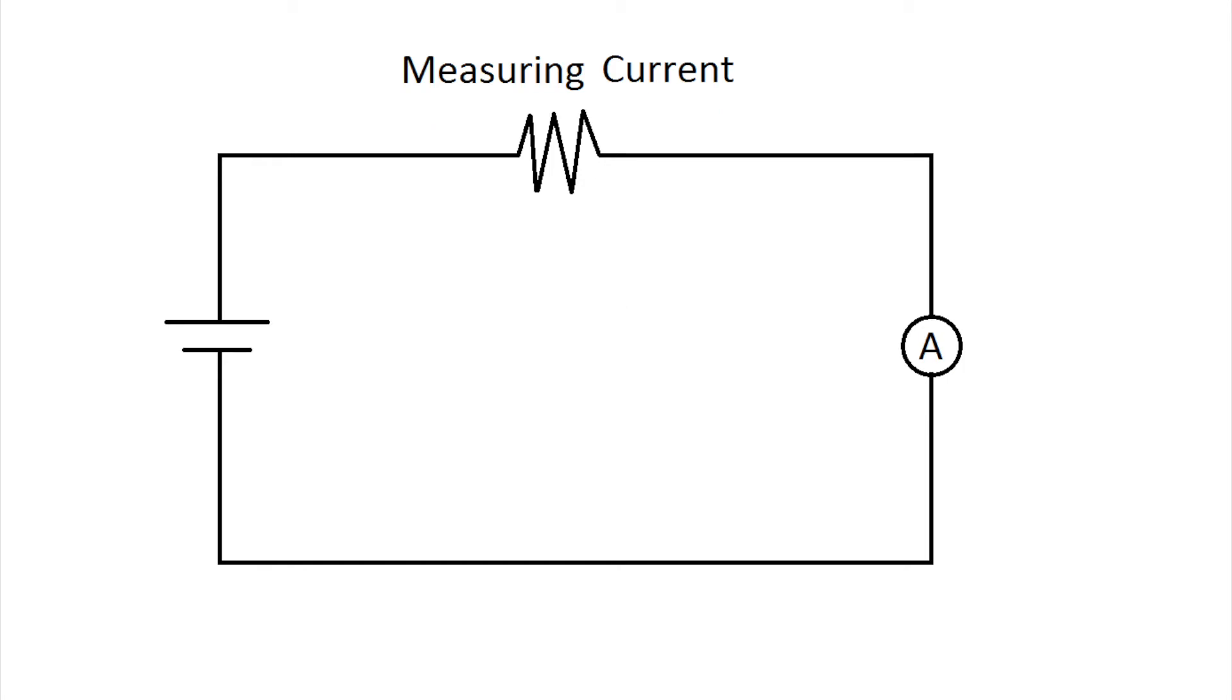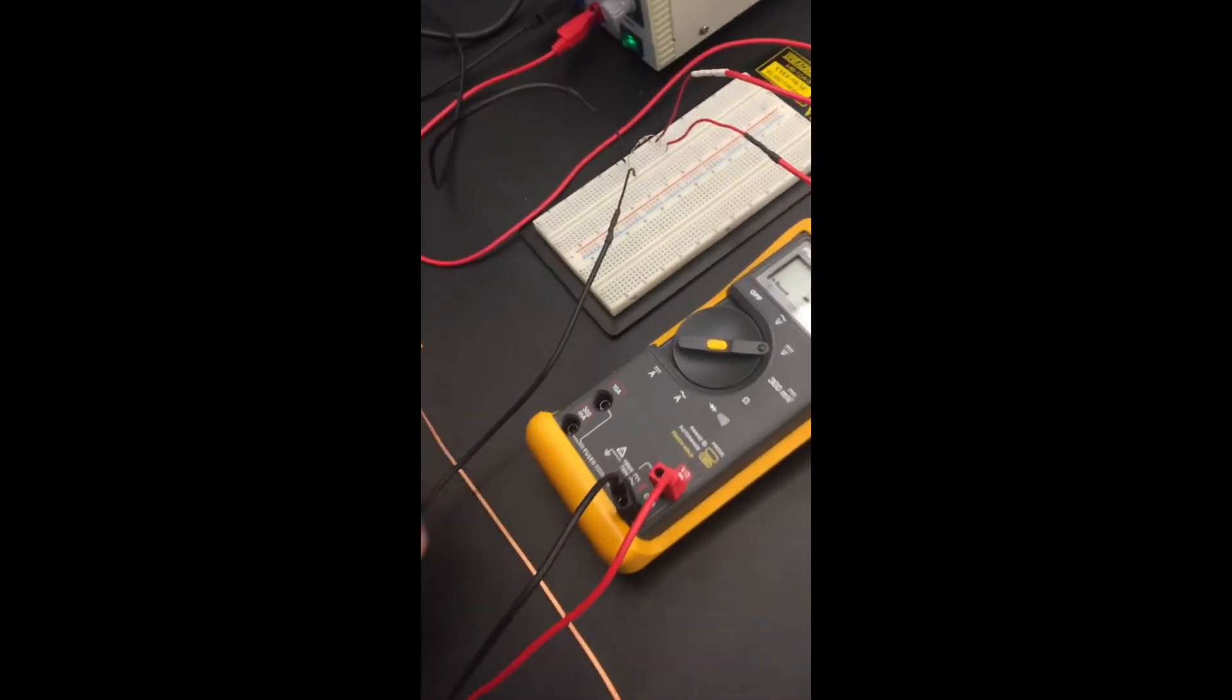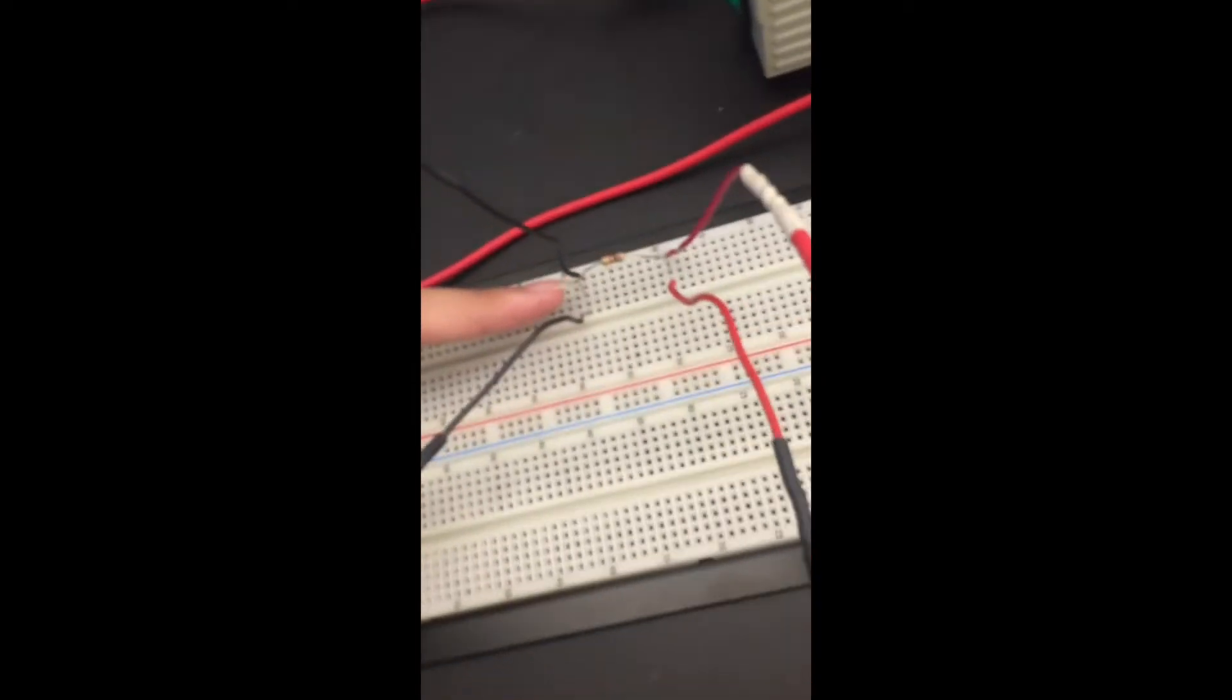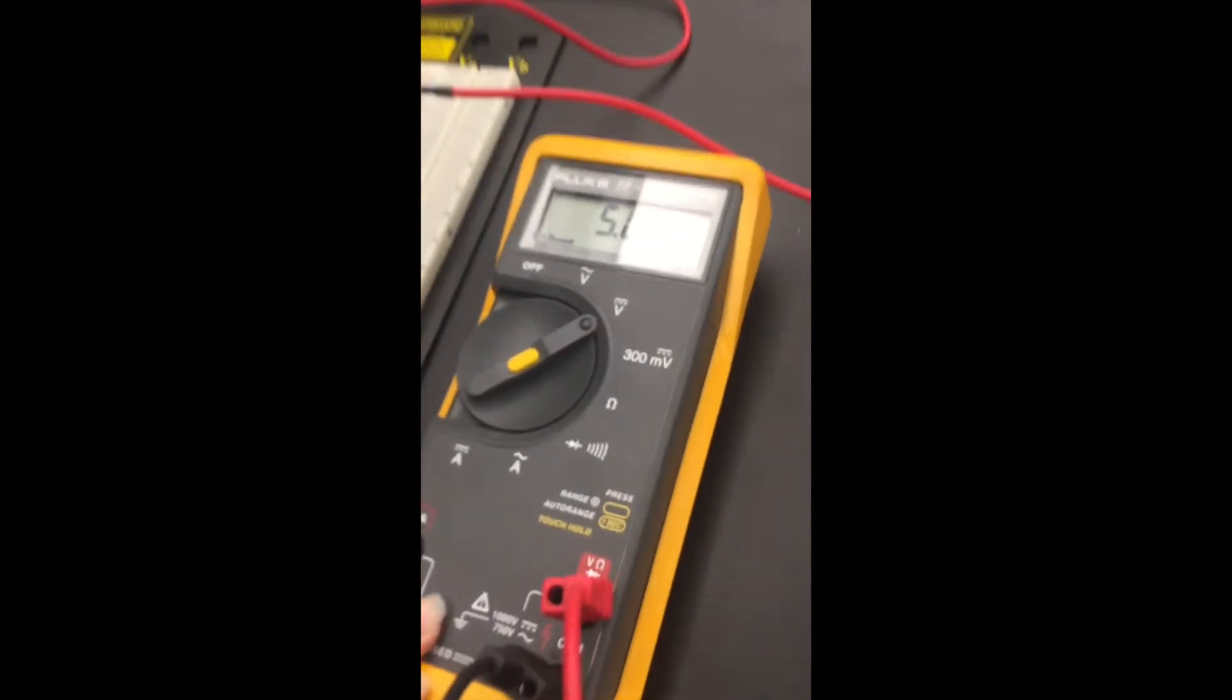So here's the circuit set up so that the multimeter is reading the voltage across a one kilo ohm resistor. Our power supply is set to five volts, and as you can see on the multimeter it reads around five volts.